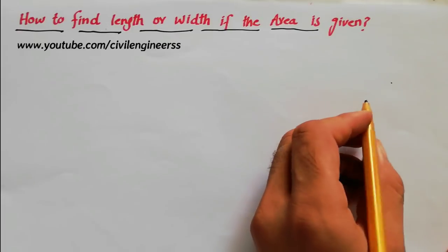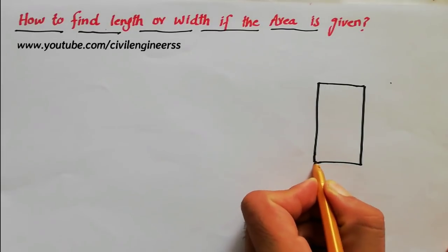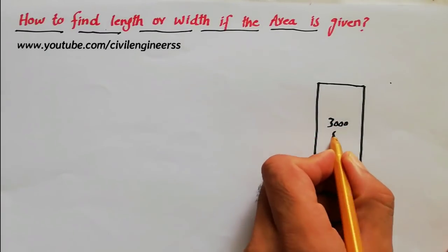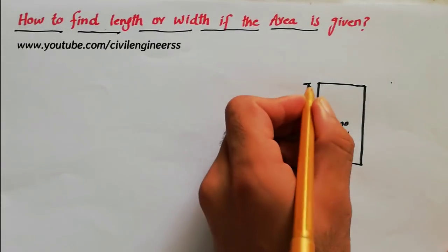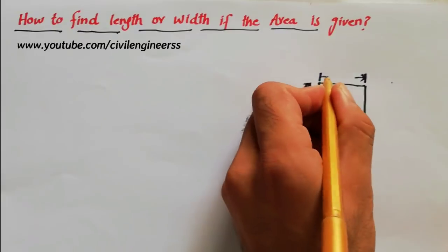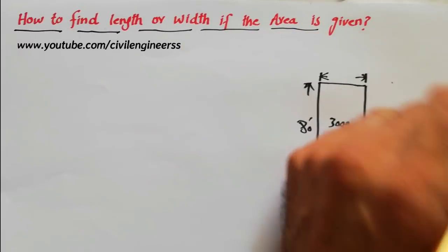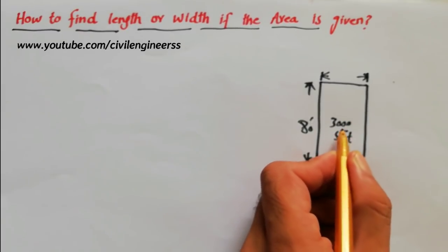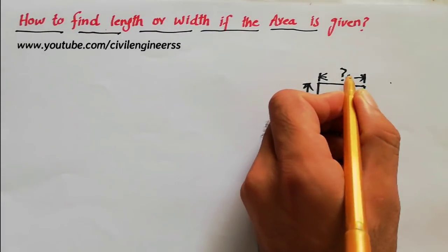Suppose this is a rectangular area and a person tells us that this area is 3000 square feet. One side is 80 feet, but I don't know what will be the width. The topic is how to find length or width if the area is given. So we have the total area of 3000 square feet and one side is 80 feet. What will be the width?